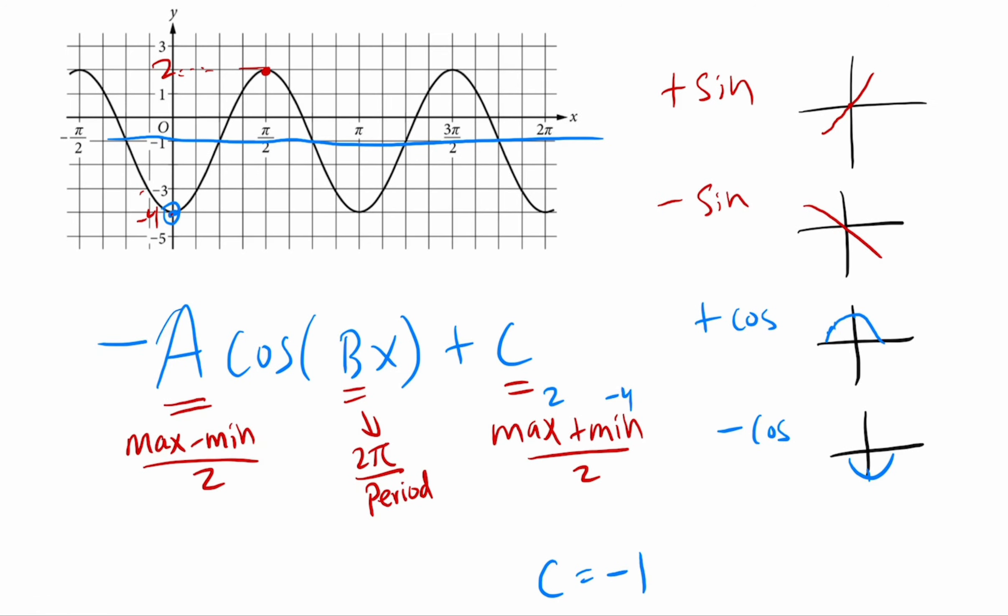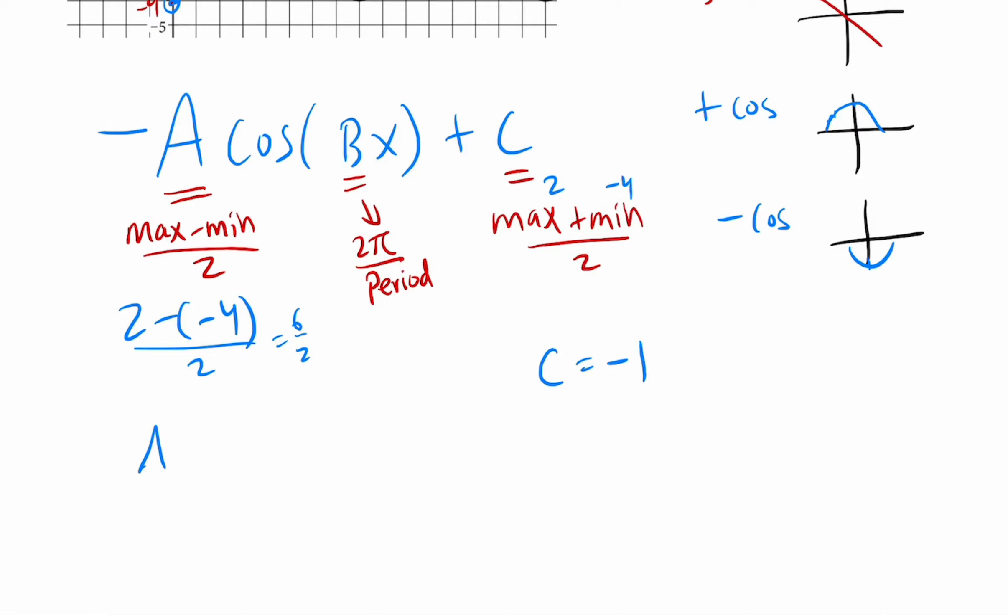Now you have sort of two ways to find the amplitude. You can either use this formula, max minus min over 2, which if you did that, it would be 2 minus negative 4 over 2, which is 2 plus 4, 6 over 2, which is 3. So the A is equal to 3.